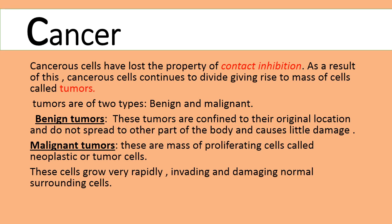Benign tumors are confined to their original location; they will not spread from one part of the body to another, so they will not cause much harm. Almost 99% of benign tumors are not cancerous. The second type is malignant tumor. These tumors are made out of a mass of proliferating cells. The cells in malignant tumors can divide rapidly and spread easily from one part of the body to another, and their high division rate means they migrate easily and damage surrounding normal cells.